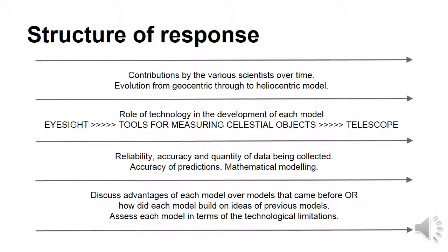For each model, you've got to look at the role of technology. So previous models, obviously, they were limited to eyesight and making observations in that way through to the development of tools that we used to measure, like the quadrant or the sextant, and then on to the telescope. So you've got to pretty much say how that has helped advance or develop the models. Then you can relate that to the collection of data in terms of reliability, the accuracy, the quantity of data that's been collected. And then you want to talk about how the accuracy of predictions are based on those models as well.